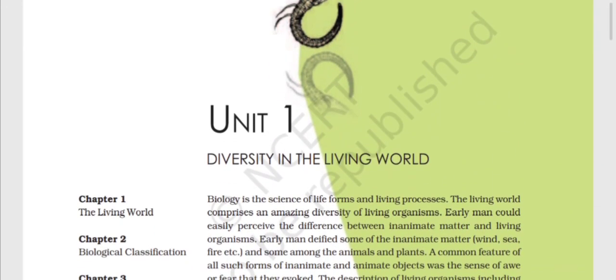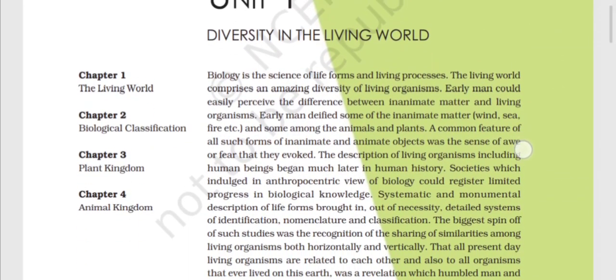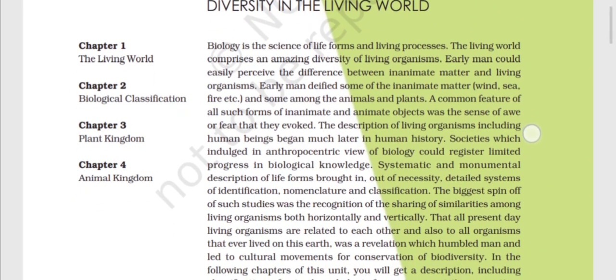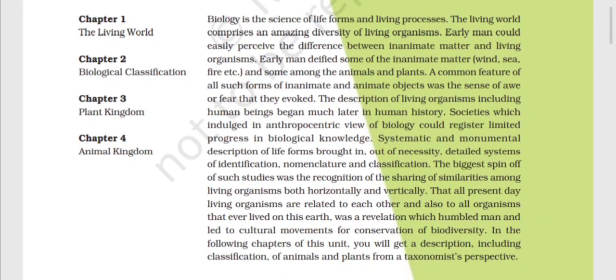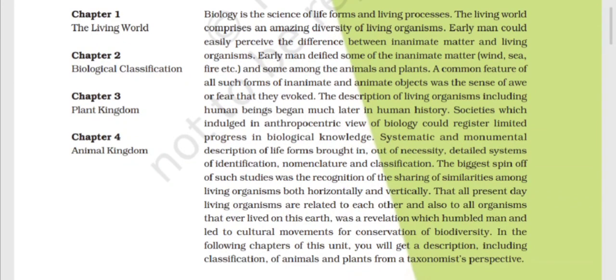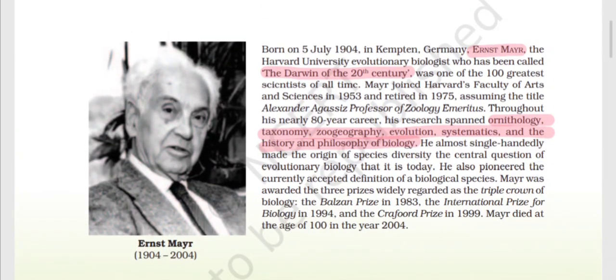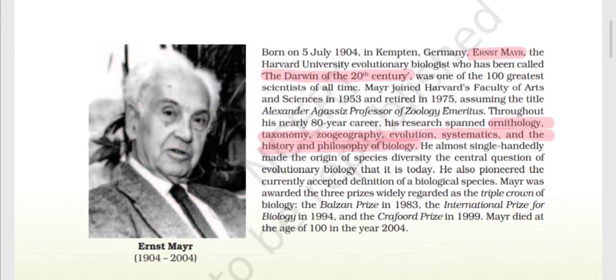Hello everyone, welcome back to our video. Today we will discuss Unit 1 of Biology: Diversity in Living World, Class 11th Chapter 1 - The Living World. The first chapter introduces a scientist named Ernst Mayr, who is known as the Darwin of the 20th century. A question has been asked in AIPMT: who is known as the Darwin of the 20th century? The answer is Ernst Mayr.